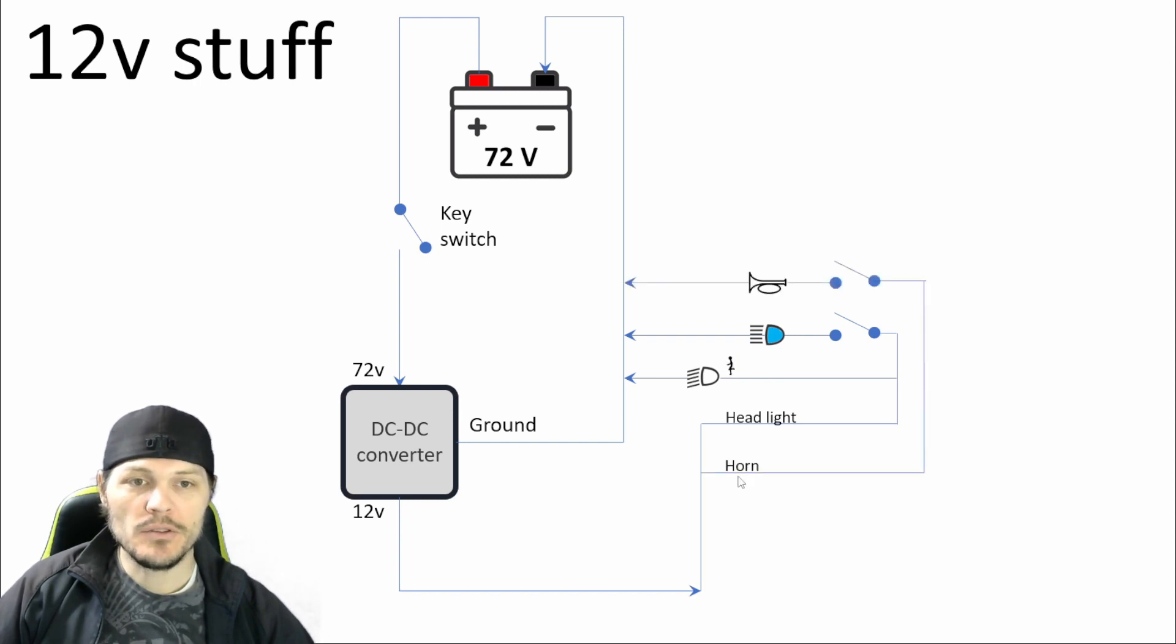Besides the headlight, there's also the horn. That's a momentary switch. When you press it, it's on. When you let go, it turns off. So if you press your horn button, 12 volts goes through the horn, and then terminates at battery negative.